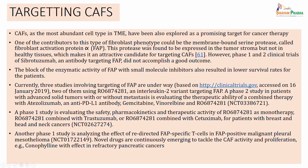One of the contributors of this fibroblast phenotype could be a membrane-bound serine protease called FAP - fibroblast activation protein alpha. This protease was found to be expressed in tumor stroma but not in healthy tissues. Therefore, this makes it an attractive candidate for targeting the CAFs. However, the phase 1 and phase 2 clinical trials of fibroblast activation protein antibody targeting FAP did not accomplish a good outcome. The block of the enzymatic activity of FAP with small molecule inhibitors also resulted in lower survival rates for the patient, so this has not been so successful.